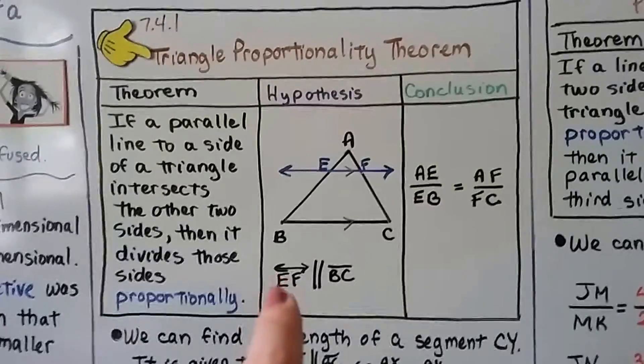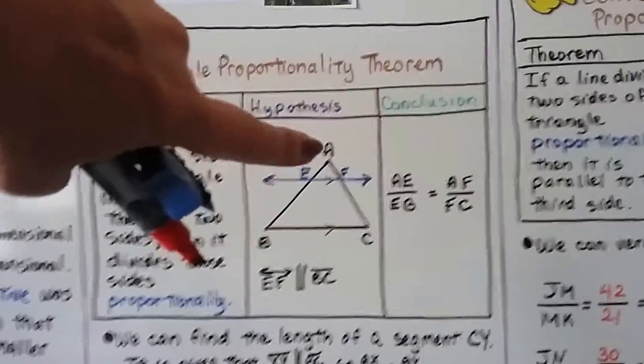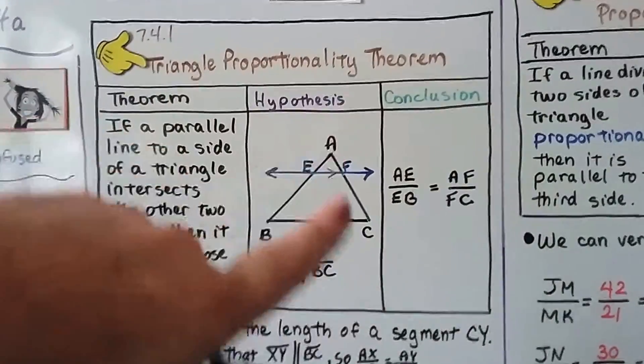And because line EF is parallel to segment BC, we've got this little part AE over EB is equal to AF over FC.